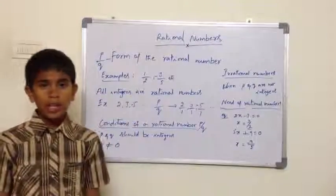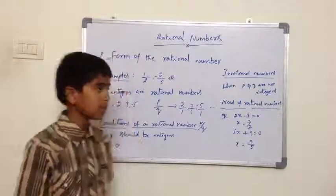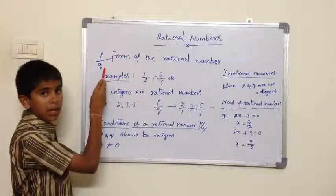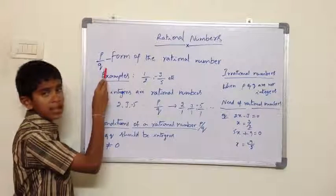Hi, today we will learn about rational numbers. A number in the form of P by Q is called a rational number.